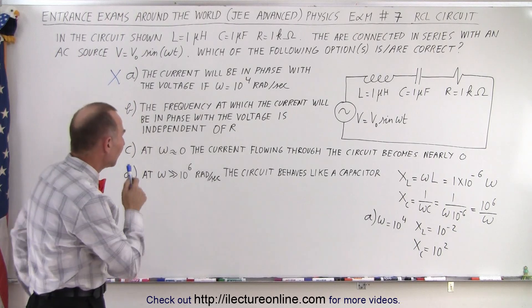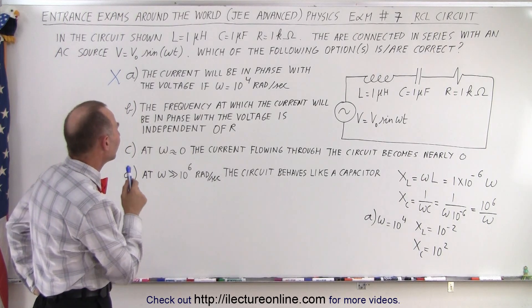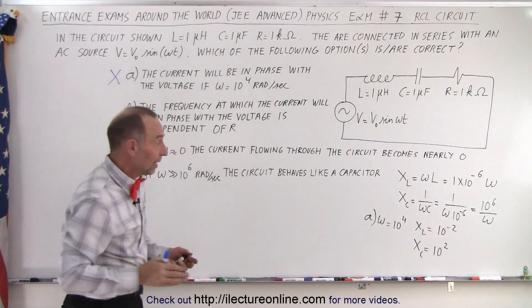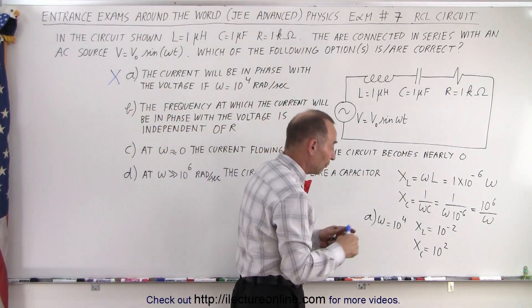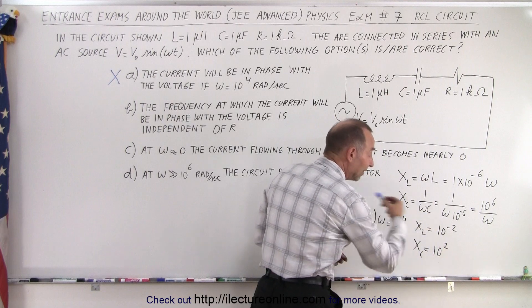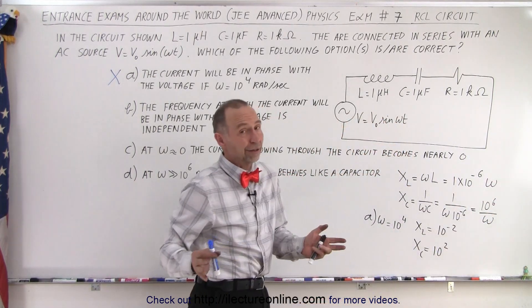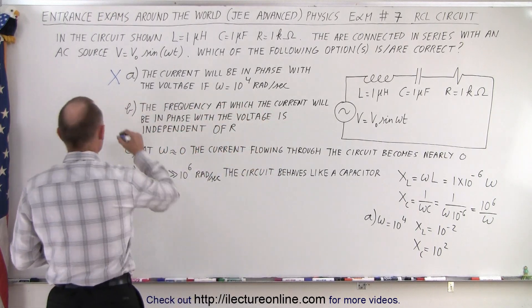How about B? The frequency at which the current will be in phase with the voltage is independent of R. The current will be in phase with the voltage if X_L equals X_C, and that has nothing to do with the resistance. Therefore, that would be a correct statement.